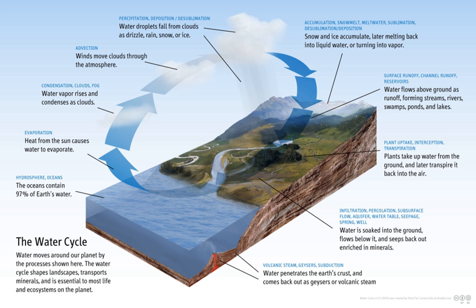Human activities that alter the water cycle include: agriculture, industry, alteration of the chemical composition of the atmosphere, construction of dams, deforestation and afforestation, removal of groundwater from wells, water abstraction from rivers, and urbanization.